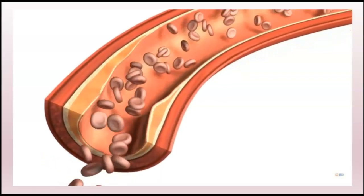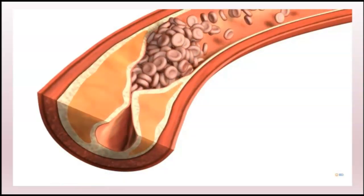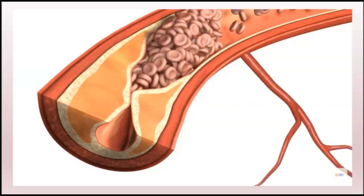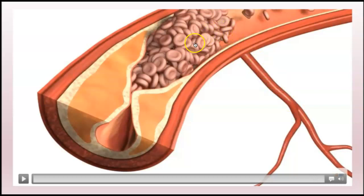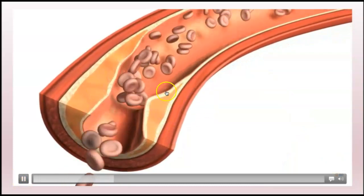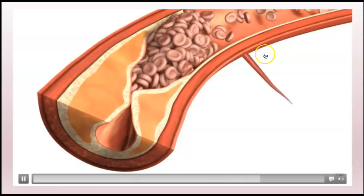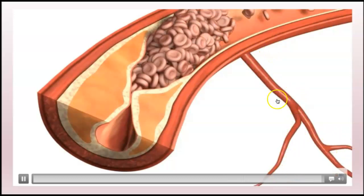You can see the blood flow going nice and smooth, then the plaque buildup causes blood cells to start clogging. This is collateral circulation — if the plaque buildup happens over time, a collateral vessel becomes activated which reroutes blood around the blockage. But this doesn't always happen. If you had plaque buildup that wasn't severe enough for collateral circulation to develop, and then a piece broke off and totally occluded the vessel, you would not have that collateral circulation protection.